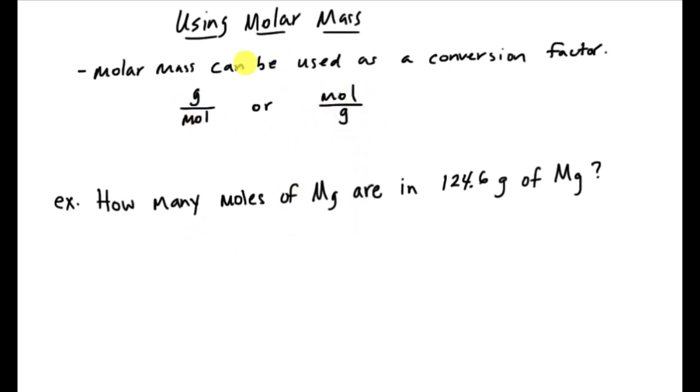So it's probably best just to look at an example and it can make sense of what I'm talking about here. So what I'm looking for is the moles of magnesium. It says how many moles of magnesium are in 124.6 grams of magnesium. So if I have 124.6 grams of magnesium, the first thing I want to do is get rid of the grams of magnesium. What I want to do is convert that to the moles.